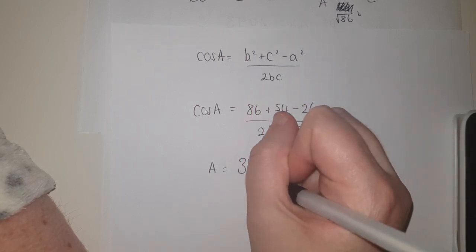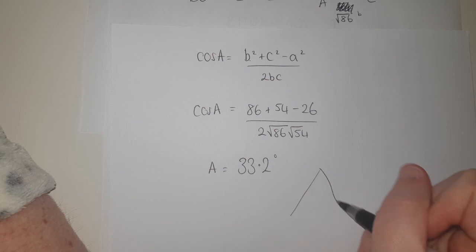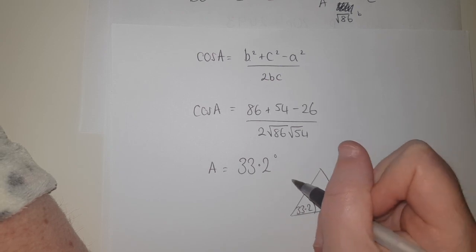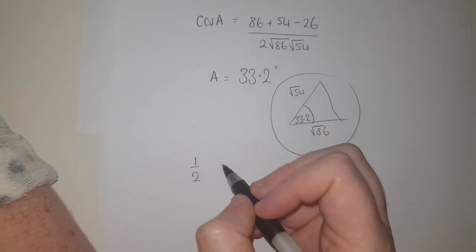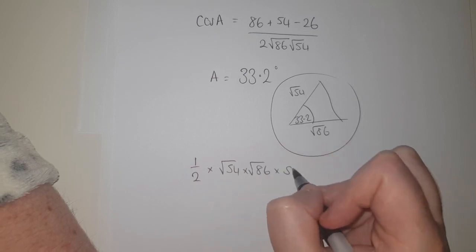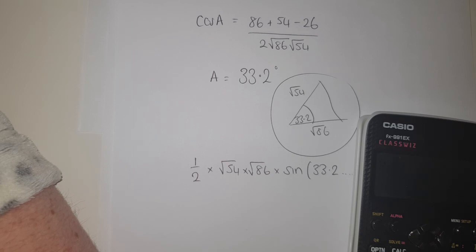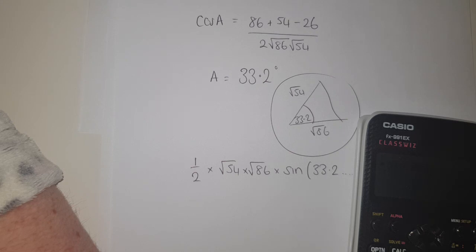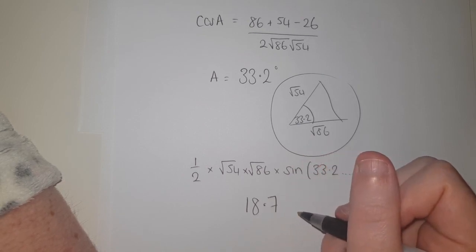With angle A ≈ 33.2° between sides √54 and √26, the area = ½ × √54 × √26 × sin(33.2°). Using the exact stored calculator value: area ≈ 18.7 square units to one decimal place.